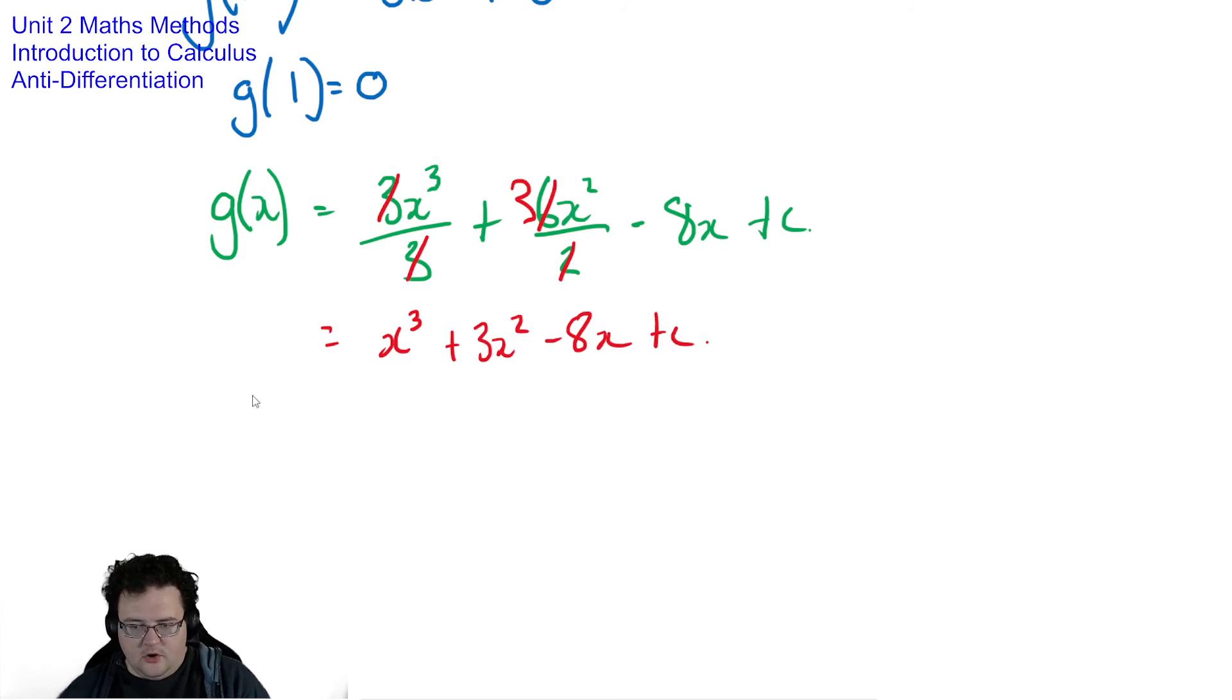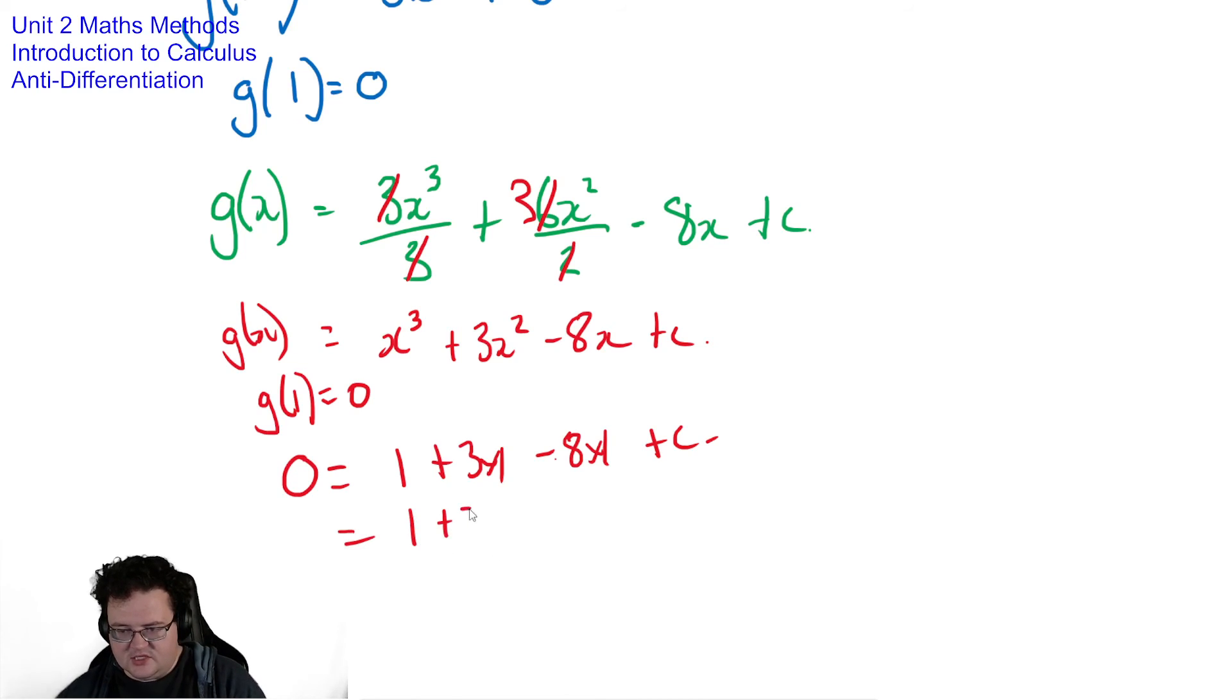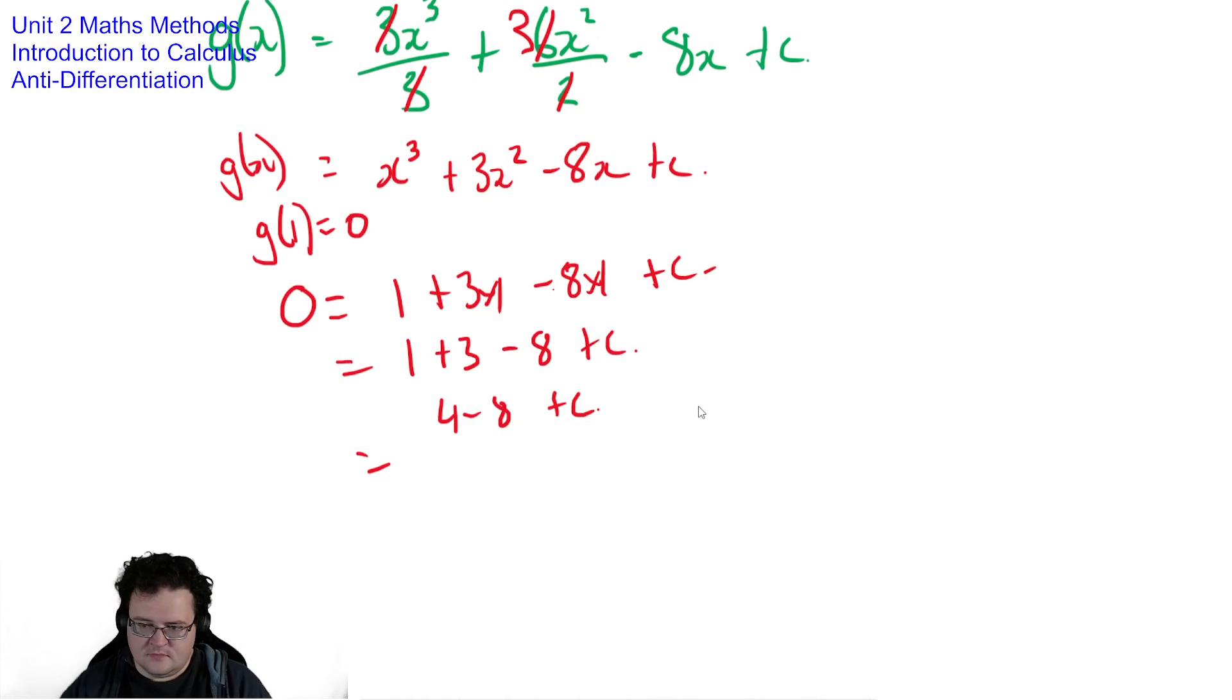Now I know that g of 1 is equal to 0. So I have my g of x. I'm now going to say g of 1 is equal to 0, that means I'm going to have 0 equals 1 plus 3 times 1 minus 8 times 1 plus c. So that's going to be 1 plus 3 minus 8 plus c. 4 minus 8 plus c. And remember this is all equaling to 0. So 4 minus 8 is minus 4 plus c, that means that c is equal to 4.